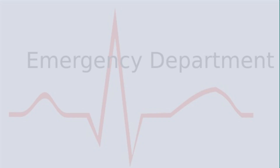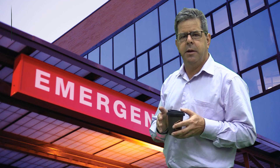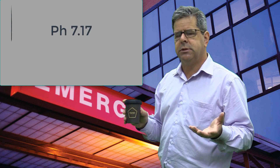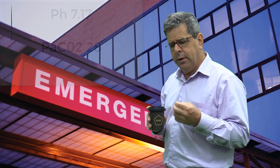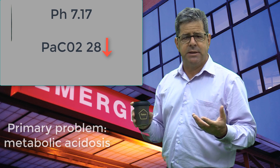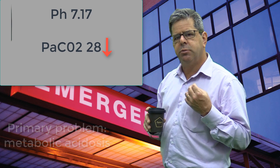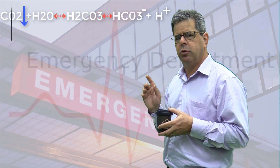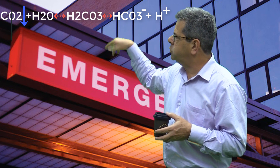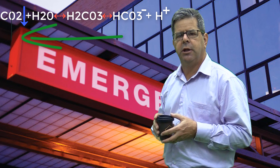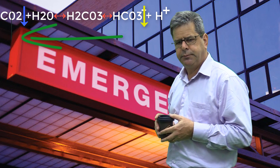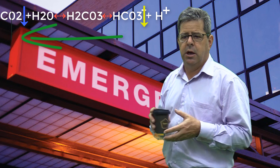Looking at another acidotic patient, if the CO2 is in fact low, that's a metabolic acidosis. You have too much H+ around, and the body responds by blowing off CO2 — the H+ combines with bicarbonate, producing CO2 that's blown off, pushing the equation to the left. Consequently, bicarbonate will be decreased because it's been used up with the H+.